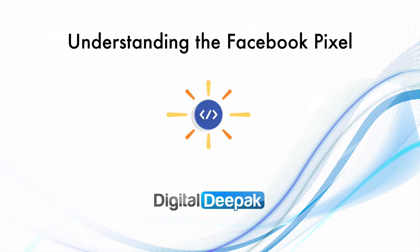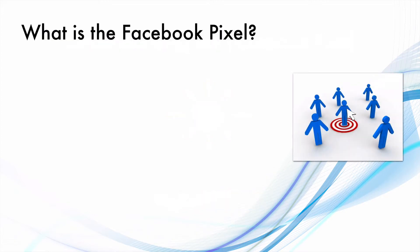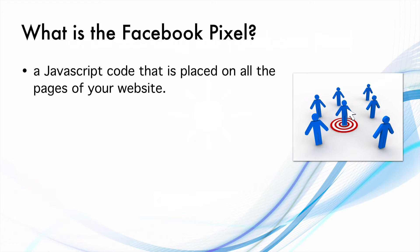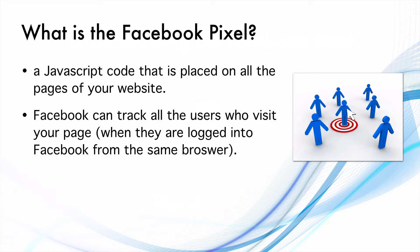So what is the Facebook Pixel? It is a JavaScript code that is placed on all the pages of your website. It helps Facebook track all the users who visit your webpage — and these are Facebook users. If you visit some other website and that website has the Facebook Pixel code, then Facebook will know that this particular visitor has visited this website. This audience segmentation helps us do retargeting and more, which I will show you in the live demo.